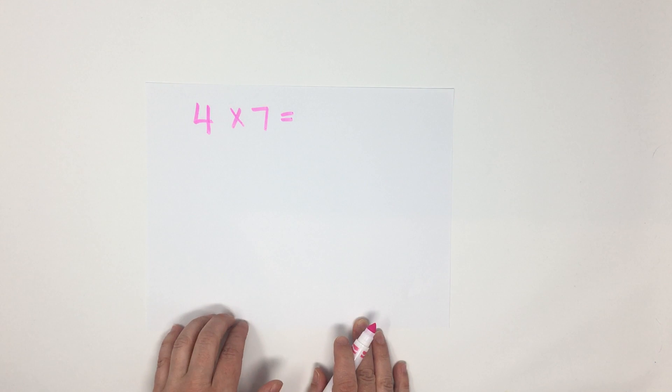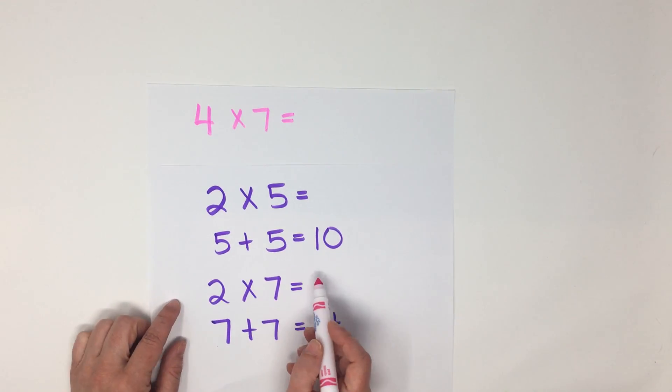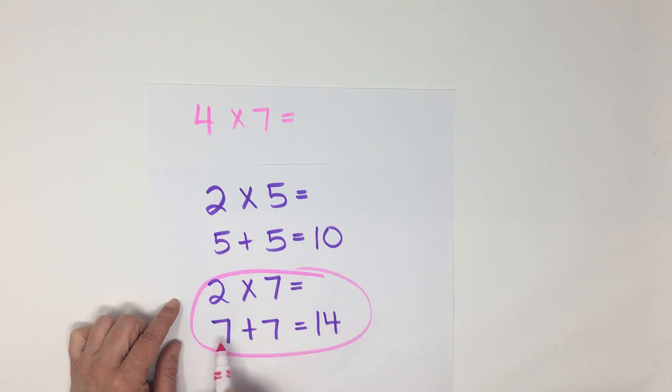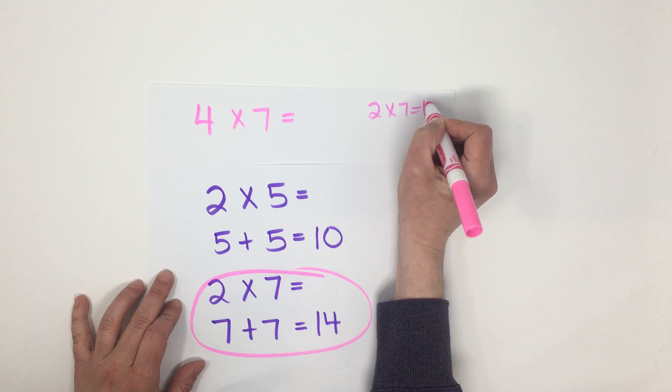4 times 7. Now that's really tricky to think of off the top of my head. So I'm going to go back to a previous video and look at what I know about 2 times 7. I know that 2 times 7 is 14. So I'm going to write that here. 2 times 7 equals 14.